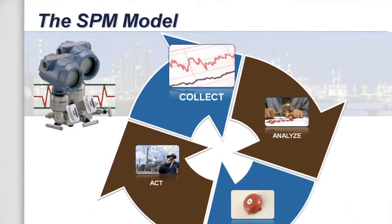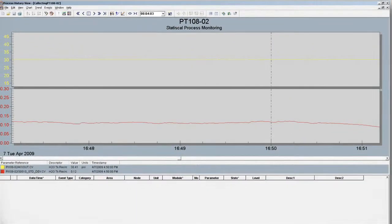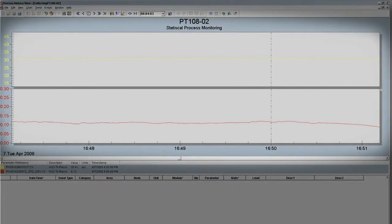The first step is to collect as much information about the process as we can. We do this by trending the pressure and process variability inside a data historian.